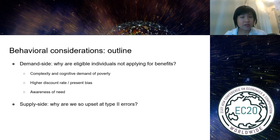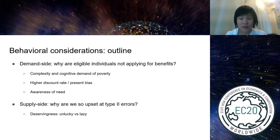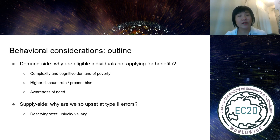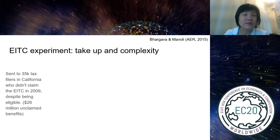The second question is on the supply side: why are we so upset about type 2 errors? This goes into our perspective about who deserves to be helped — wanting to separate those who are unlucky from those who are lazy — and how this affects how we present benefits.